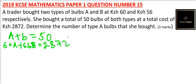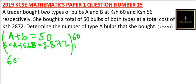So these are simultaneous equations which we can solve. We will multiply the first equation by 60 and the second by 1. So we will have 60 multiplied by A giving us 60A, then plus 60B equals 60 multiplied by 50, which gives us 3,000.